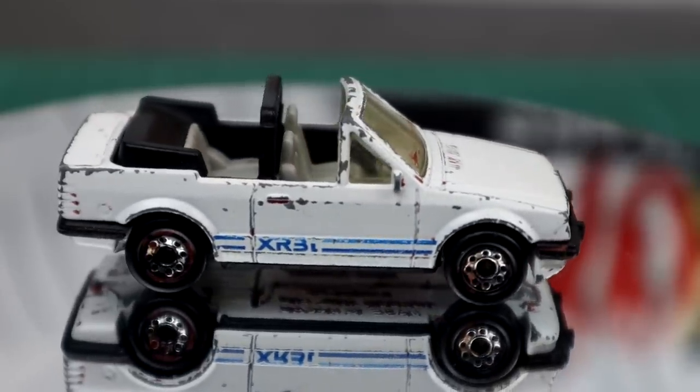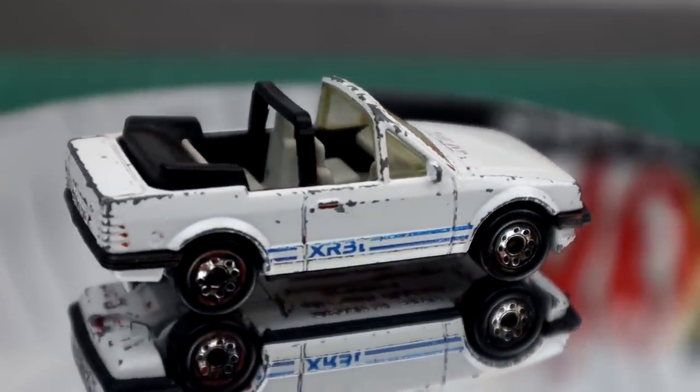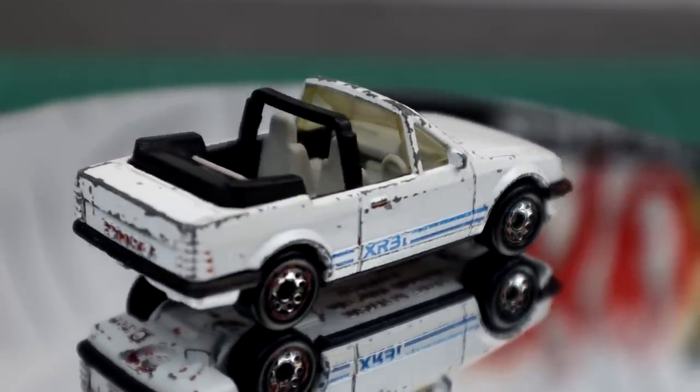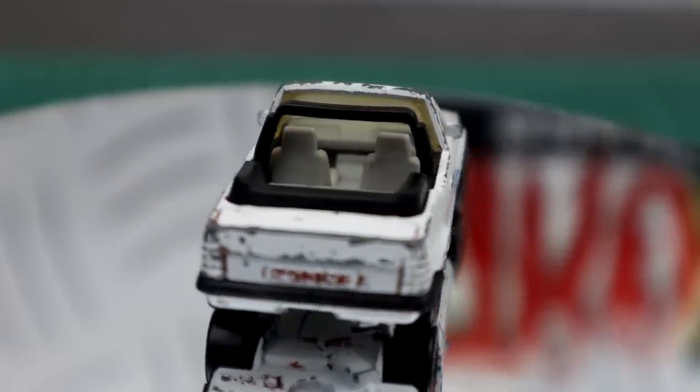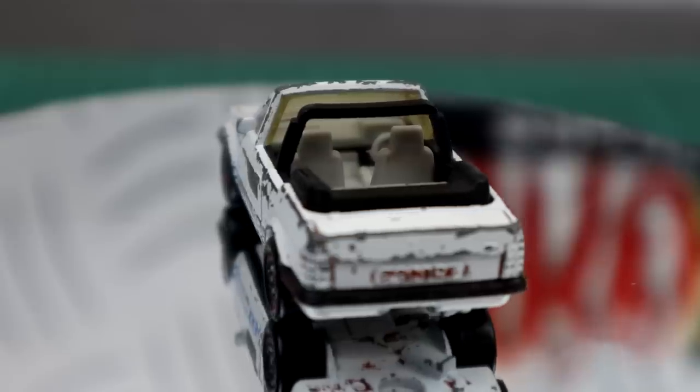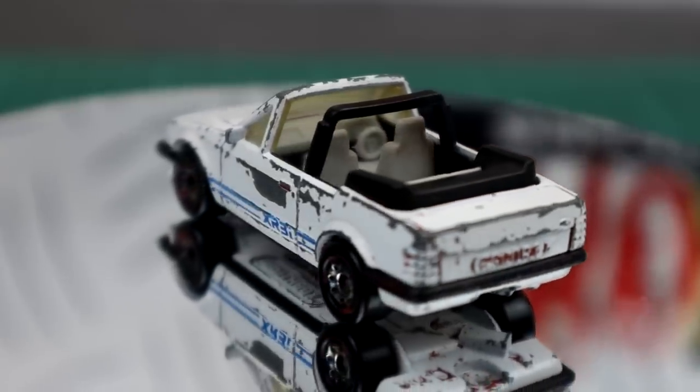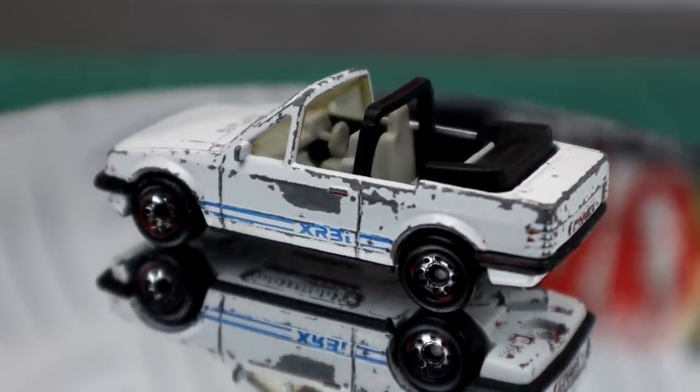The first one was the XR3, which was a carbureted version. This one was the XR3i, which they took the carb off and put fuel injection on. And also, the Cabriolet, obviously, had the roof off. We didn't get many of these over here or see many in the UK, but still a very nice car.